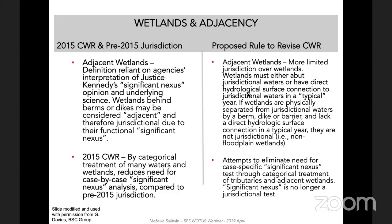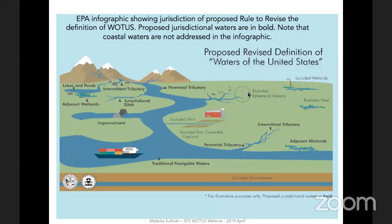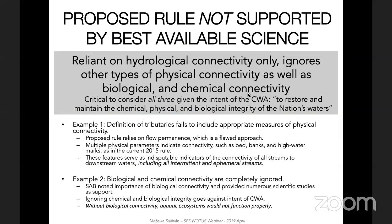The proposed rule attempts to eliminate the need for case-by-case significant nexus tests, or acknowledges the need for complex professional-level site evaluations to determine jurisdiction in a variety of situations. The rule does not appear to meet its own stated goals of achieving clarity, predictability, and consistency. This is the EPA graphic showing the intended jurisdiction of the proposed rule, with proposed jurisdictional waters shown in bold. Notably, coastal waters are not addressed in the graphic. Having discussed connectivity and the scope of the proposed rule, let's turn our attention to its lack of grounding in current science.